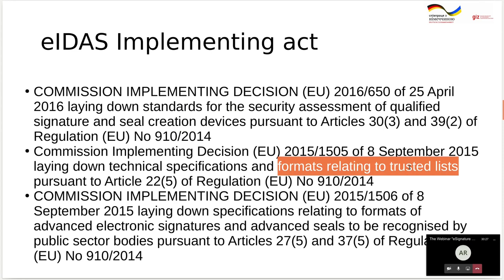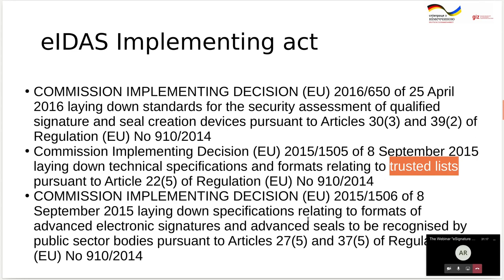As mentioned in the first webinar, the trust list is a registry of qualified trust service providers, qualified by the government, so you can trust them. It is also machine-readable data usable for cross-border transactions. The European Commission maintains a trust list of trust lists that joins all trust lists of the member states. The idea is that Eastern Partnership countries can also create a trust list of trust lists to enable cross-border transactions between our countries. The last implementing decision relates to the formats of advanced electronic signatures, including PDF signatures, ASiC zip signatures, and XML signatures.